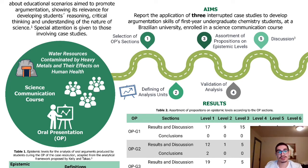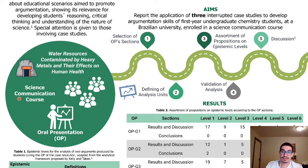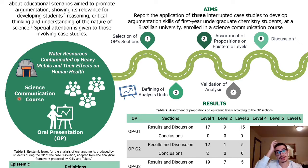The three Interrupted Case Studies produced were within the theme of water resources contaminated by heavy metals and their effects on human health. Each case was solved by a group of five students in the science communication course. They had to go through a series of activities to solve the case and find a solution to the problem being portrayed, which included raising hypotheses, choosing sample points on a map, choosing equipment to do the analysis, and discussing the data from the research articles that originated the case. As a final activity, they had to perform an oral presentation with the solution the group had chosen to give to the case.